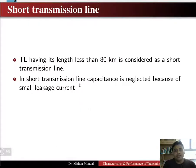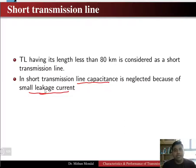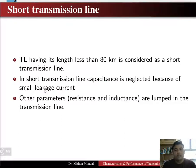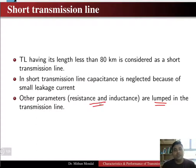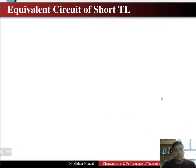For a short transmission line, we neglect the line capacitance because the leakage current is very small. All the parameters will be in lumped form — that is, the resistance and inductance are lumped. In long transmission lines we deal with distributed parameters, but here we use lumped parameters.